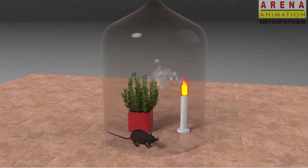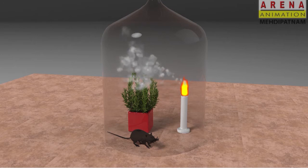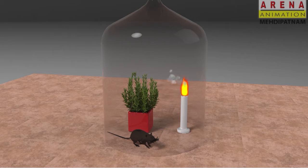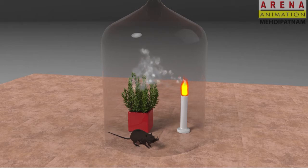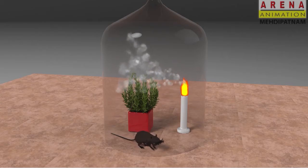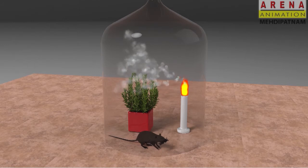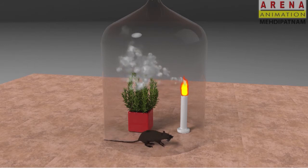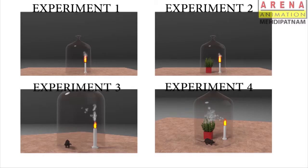Experiment 4: Light up the candle. Now keep the bell jar on top of them as shown in the video. The rat which is placed in the bell jar with the mint plant and the burning candle lived happily.